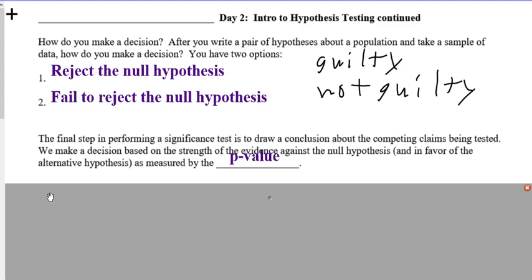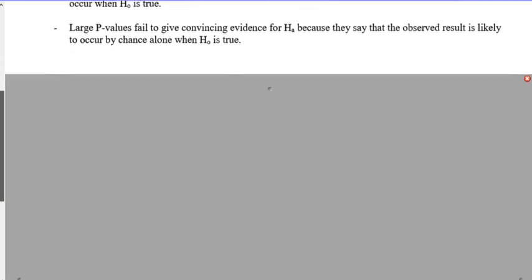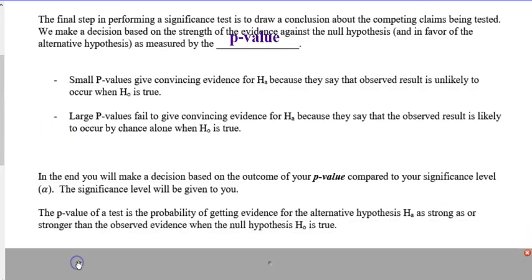You're going to go against the null hypothesis in favor of the alternative as measured by the p-value. Now we're going to be getting into some stuff today that we don't know about how to do yet. So just work with me on that. We're going to learn the formula for stuff later. We're just going to give you the information today. Now, this is very important. Small p-values give convincing evidence for the Ha.